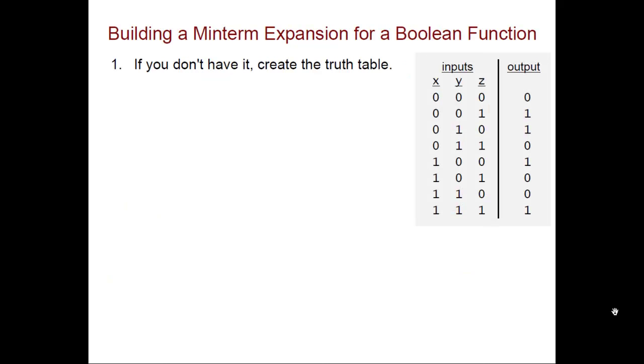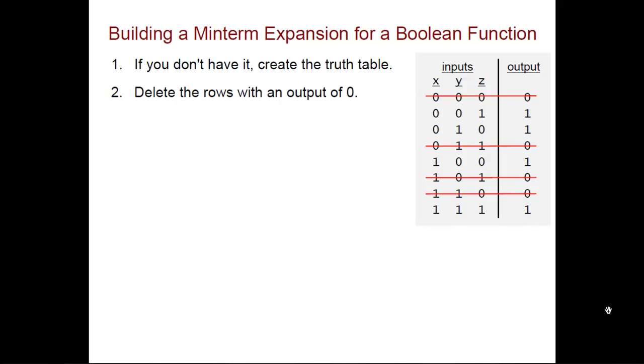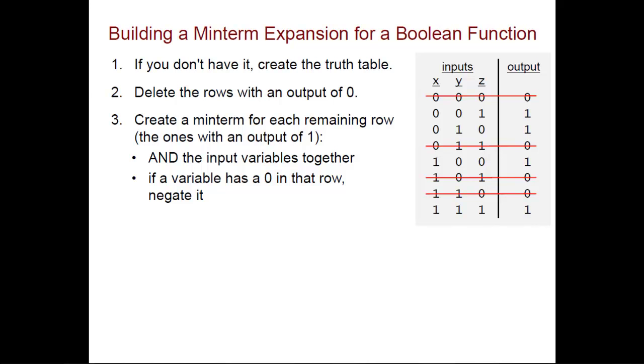To build a min-term expansion, first create the truth table for your Boolean function if you don't already have it. You can do that by asking yourself what's the appropriate output for each combination of inputs. Next, cross out all rows that have an output of 0 and focus on the ones that have an output of 1. For each of those rows that have an output of 1, we're going to create what's known as a min-term. We're going to AND the input variables together. If a variable has a 0 in that row, we're going to negate it.